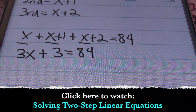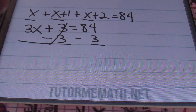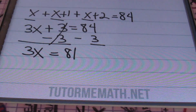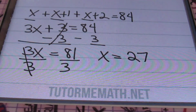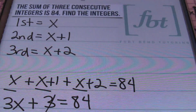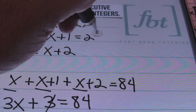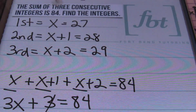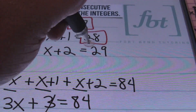I'll solve this two-step equation by subtracting three from both sides of the equal sign. My threes cancel out on the left side, leaving 3x equal to 84 minus three, which is 81. My next step is to divide both sides by three, so x equals 27. I now know my smallest value is 27. Going back to our defined values: x is 27, x plus one is 28, and x plus two is 29. So the three consecutive integers that add to 84 are 27, 28, and 29.